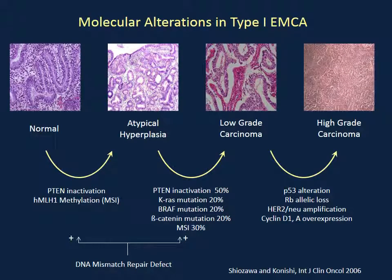Endometrial cancer is comprised of two types. Type 1 endometrial cancer progresses from normal to a pre-malignant abnormality called atypical hyperplasia, to low-grade cancer, to a high-grade cancer. There are many mutations associated with that progression, and we can target many of these specific abnormalities. We are not very good at it yet, but over time we will become good at it and can likely target future treatments with much less toxicity.